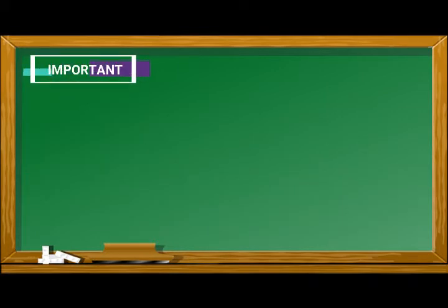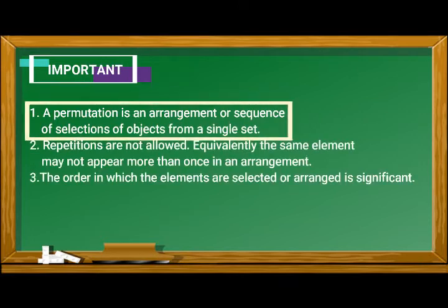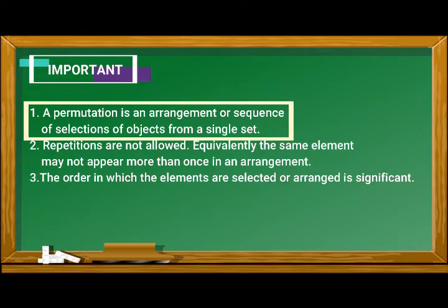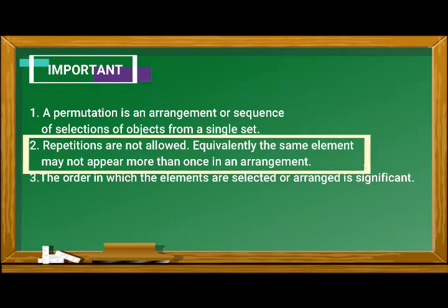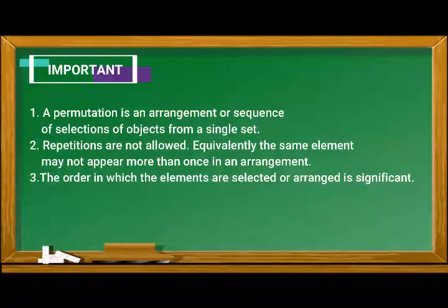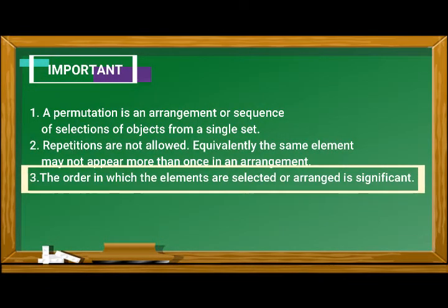Important! A permutation is an arrangement or sequence of selection of objects from a single set. Repetitions are not allowed. Equivalently, the same element may not appear more than once in an arrangement. The order in which the elements are selected or arranged is significant.